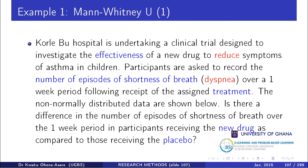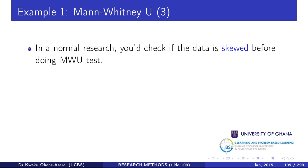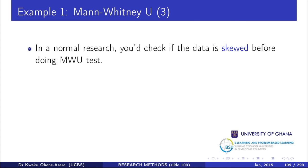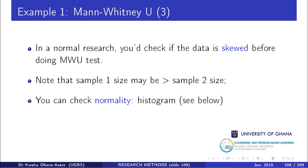Before starting, in a normal research context you would first check if the data is skewed. If it is normally distributed, you stop and use an independent t-test instead of Mann-Whitney. The sample size of one group may be greater than the other — in our case they are equal. You can check normality by looking at a histogram.